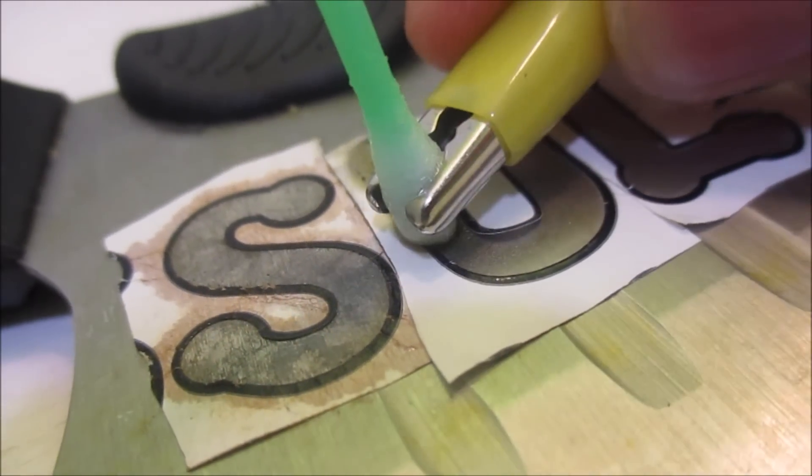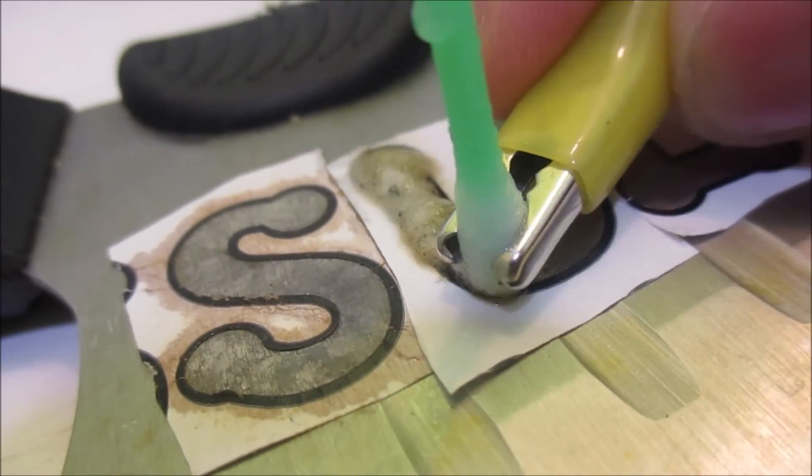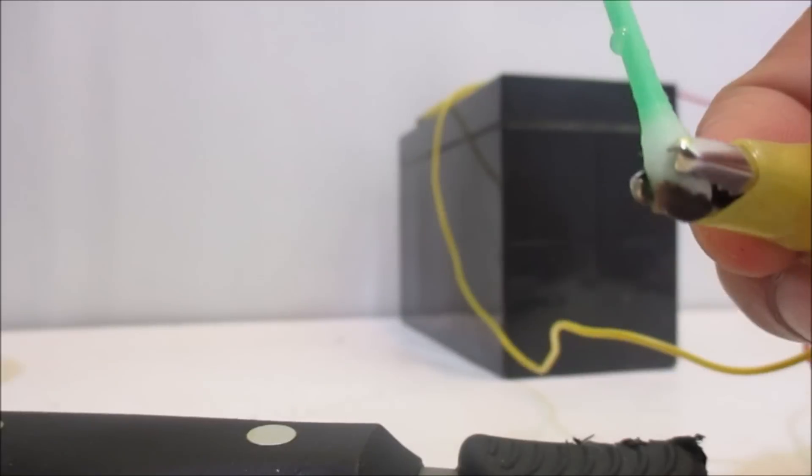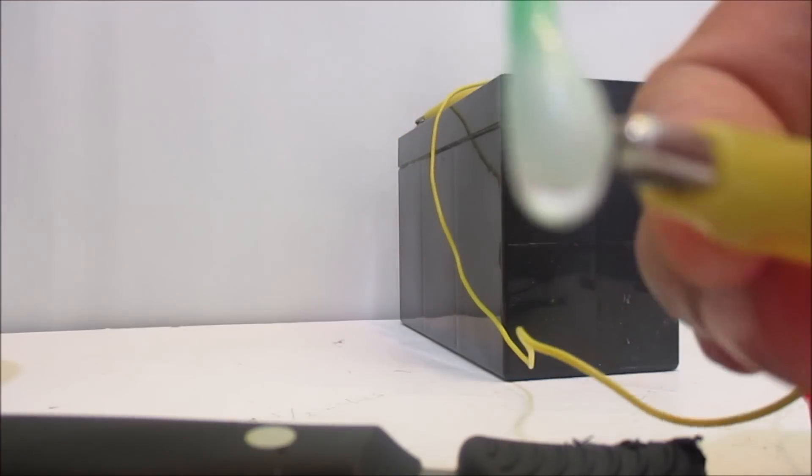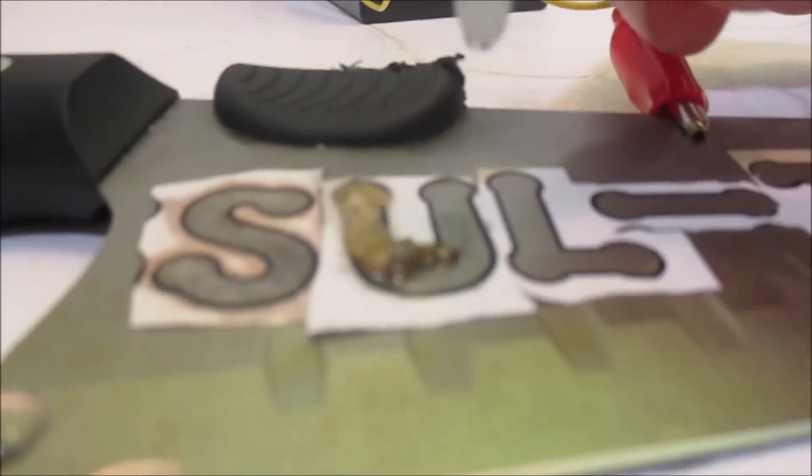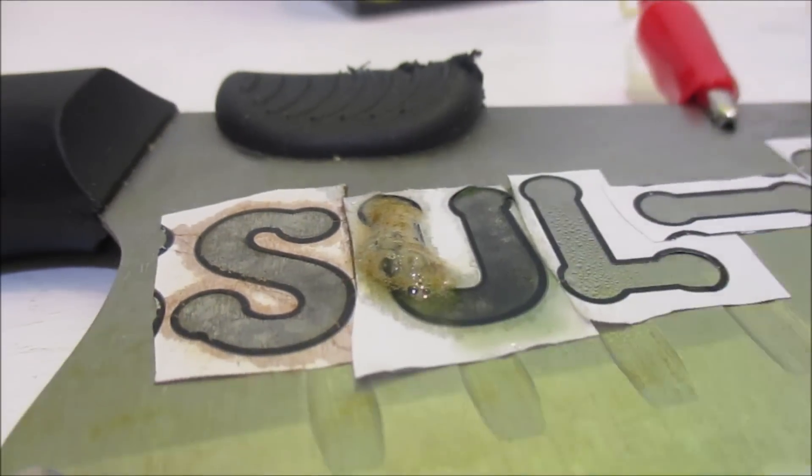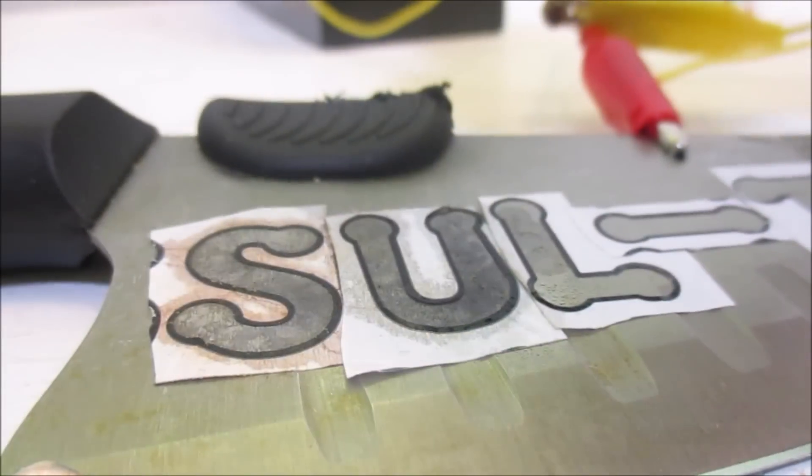Make sure the negative clip does not touch the bare metal as it will create spark. Switch out your cotton swabs once one of the ends turn black.